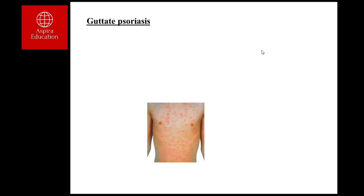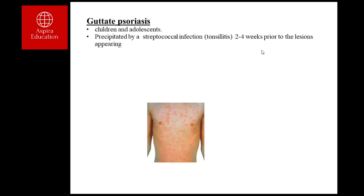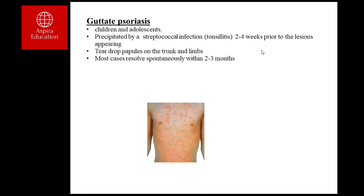A less common form is guttate psoriasis, common in children and adolescents. It is precipitated by streptococcal infection — usually tonsillitis — about two weeks before the lesion appears. It presents with teardrop-shaped papules on the trunk and limbs. Most cases resolve spontaneously within two to three months. Topical agents are given, and treatment of psoriasis will be discussed in detail subsequently.